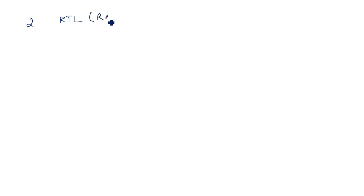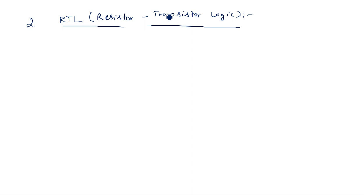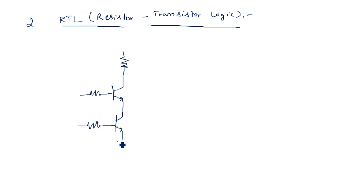Now let us see the RTL realization — the second type, which is resistor-transistor logic. How do we design a NAND gate using resistors and transistors? In this circuit we have a resistor with two transistors. For each input there is one transistor, so for two inputs A and B we use two transistors connected in series. The supply is plus 5V VCC through resistor R, and output Y is taken from the collector. The base resistors are R1 and R2.